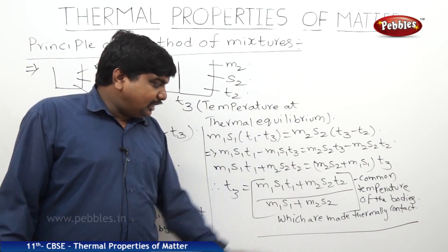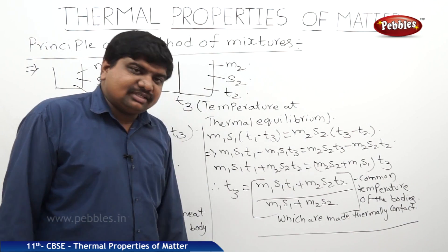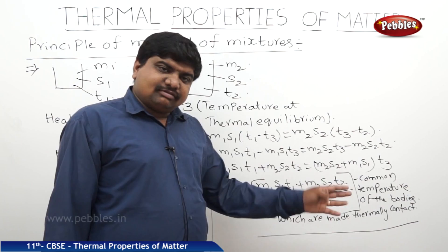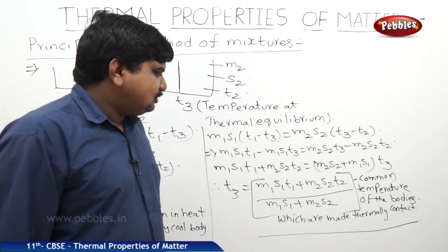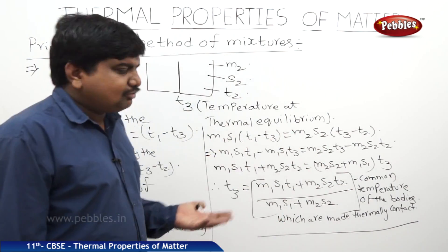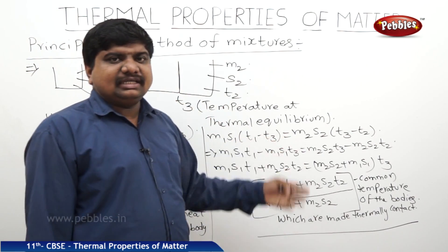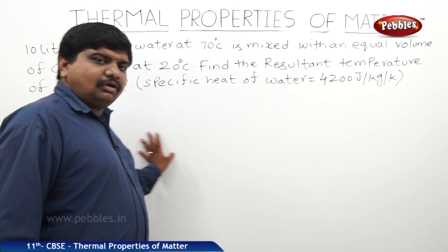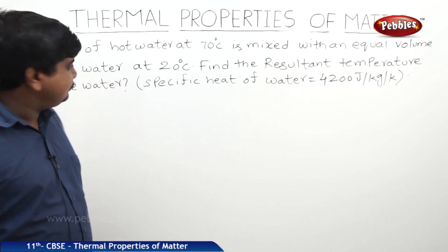If M1 is equal to M2, then the equation becomes (S1·T1 + S2·T2) / (S1 + S2). The special cases depend upon the nature of the materials used in the experiment. Now here is a numerical problem based on the principle of method of mixtures.